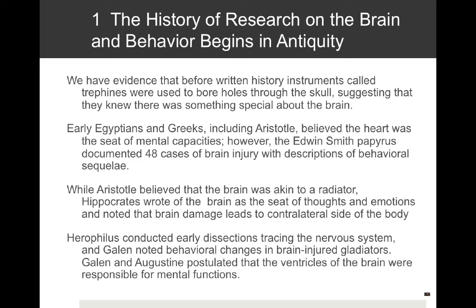Now let's talk about the history of biological psychology. We have evidence that before written history, instruments called trephines were used to bore holes through the skull, suggesting ancient people knew there was something special about the brain. We don't know whether they were trying to remove spirits or relieve compression — a practice we still perform today in craniotomies. Early Egyptians and Greeks, including Aristotle, believed the heart was the seat of mental capacities. However, the Edwin Smith Papyrus documented 48 cases of brain injury with descriptions of the behavioral consequences that accompanied them.